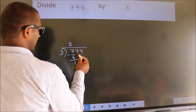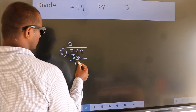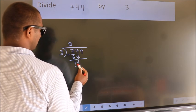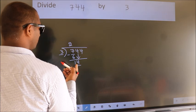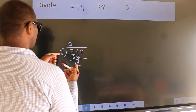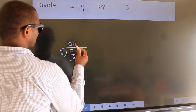After this, bring down the beside number. So, 4 down. So, 14. A number close to 14 in 3 table is 3 times 4 equals 12.